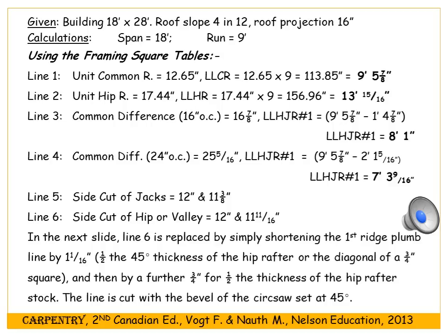Line five gives the side cut of the jack. Holding the framing square at 12 on one side and 11 eighths on the other, the line on the 12-inch side gives the angle across the top of the lumber for the side cut. Line six gives the side cut for the hip or valley rafter. These numbers matter when cutting with a handsaw. If cutting with a circular saw, lay the board flat and cut across the face with the saw set at 45 degrees — this automatically produces the side cut line on top.